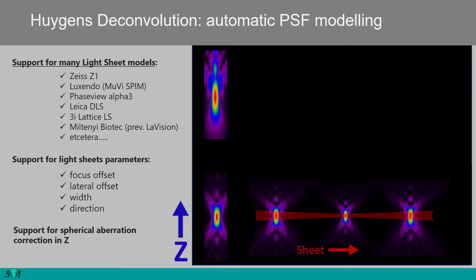Huygens deconvolution automatically takes into account different modes of illumination and sheet geometries. It also takes into account both spherical aberration along the optical axis and the variation of the point spread function with the thickness of the lightsheet. Therefore, many models of lightsheet microscope, including the most common commercially available as well as custom-built ones, are supported.